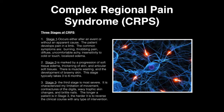There are three stages of complex regional pain syndrome. Stage 1 occurs either after the event or without an apparent cause. The patient develops pain in a limb. Common symptoms are burning, throbbing, diffuse, uncomfortable, achy, insensitive to cold or touch, and localized edema.